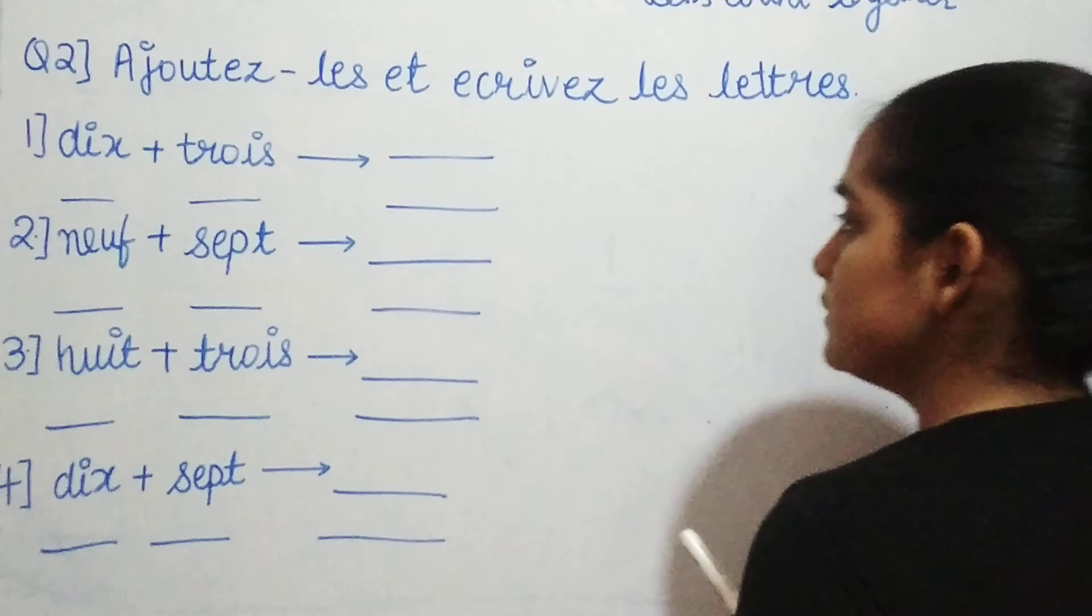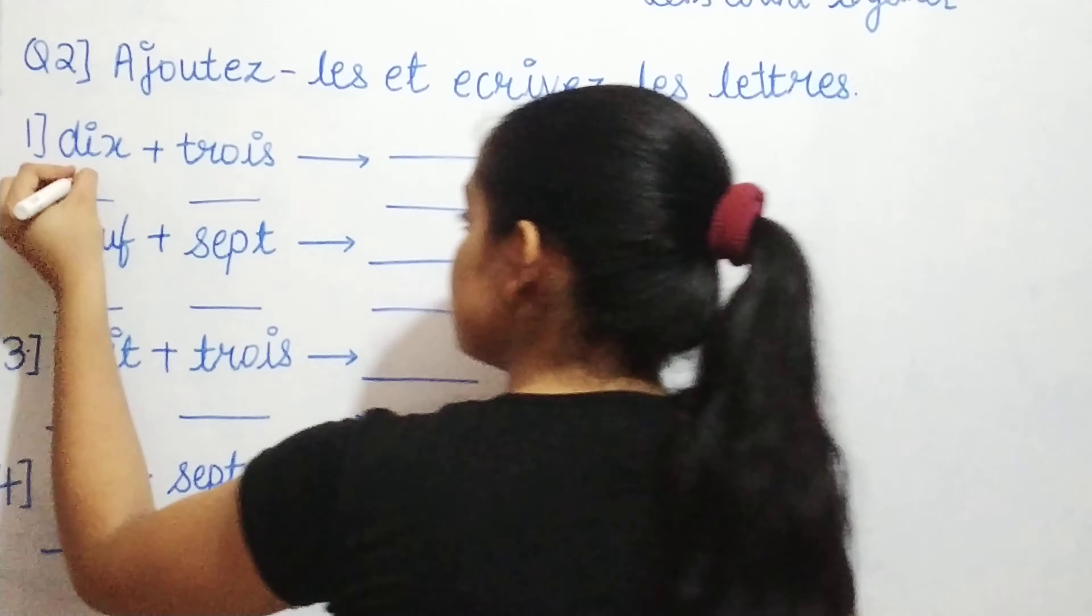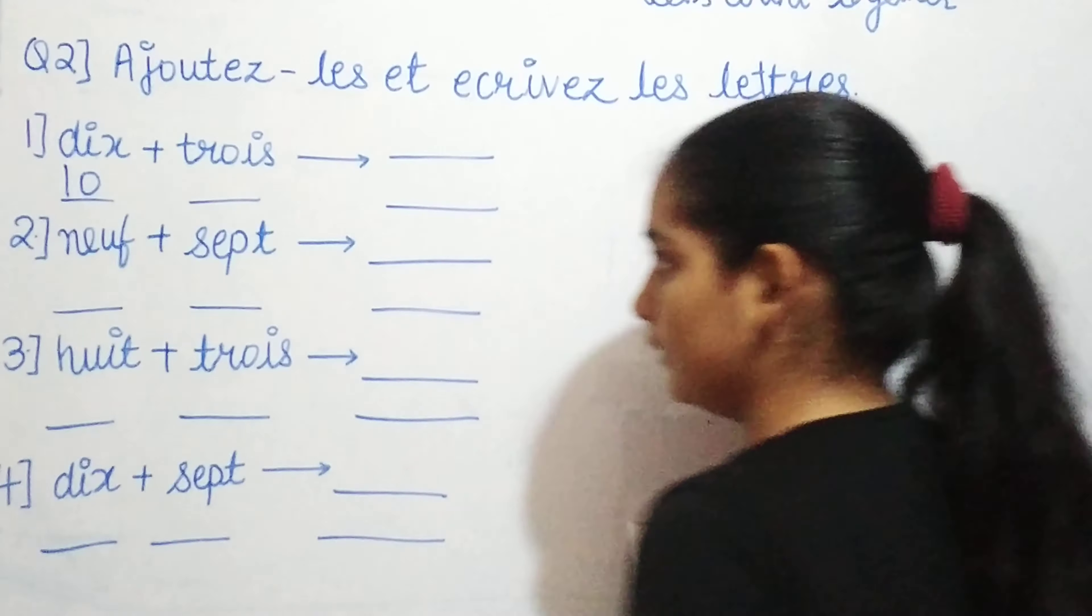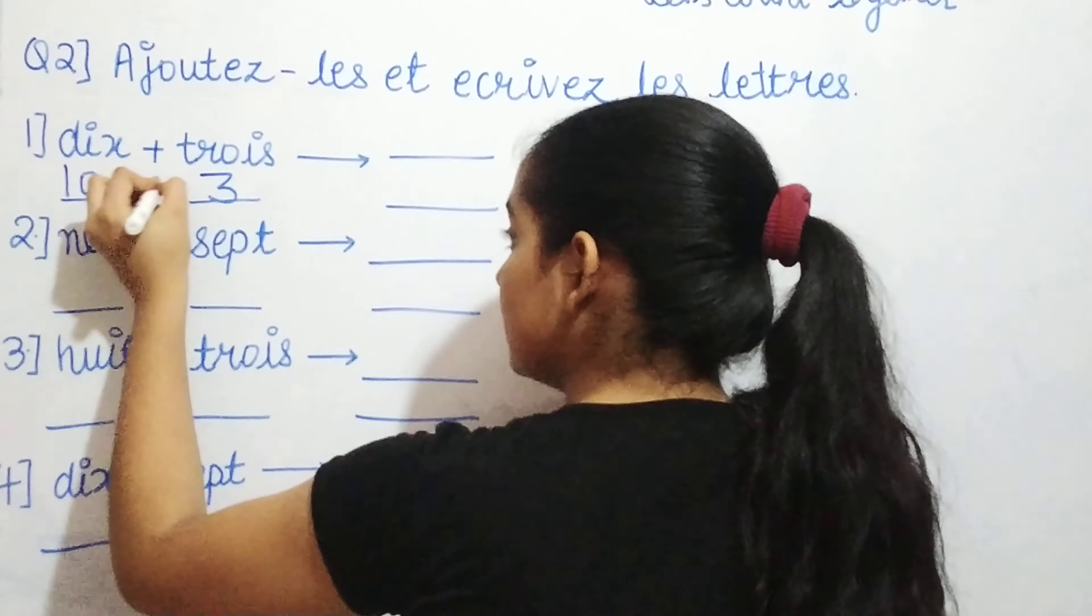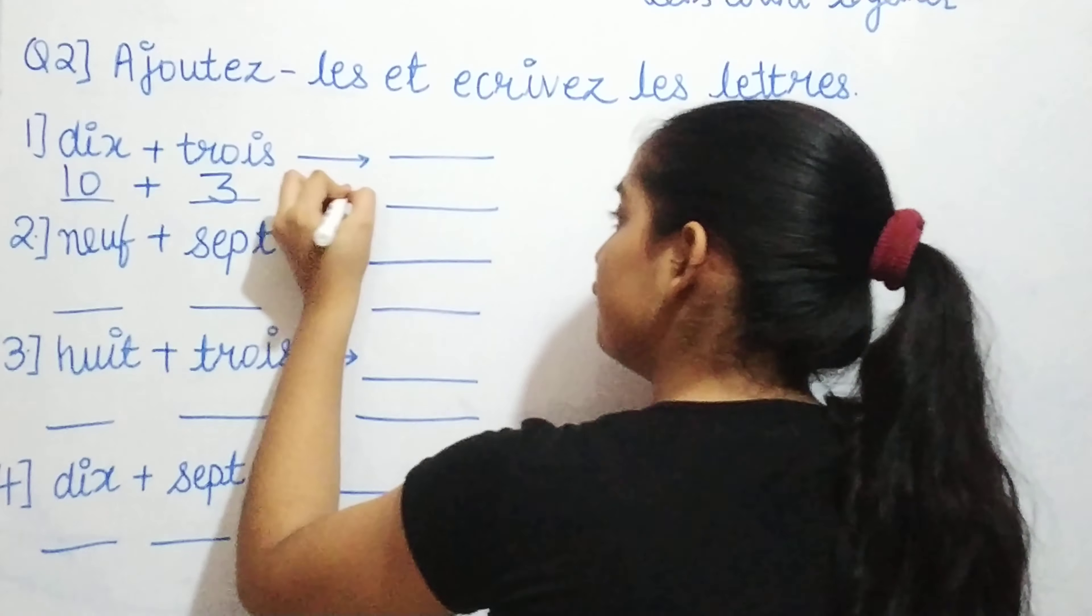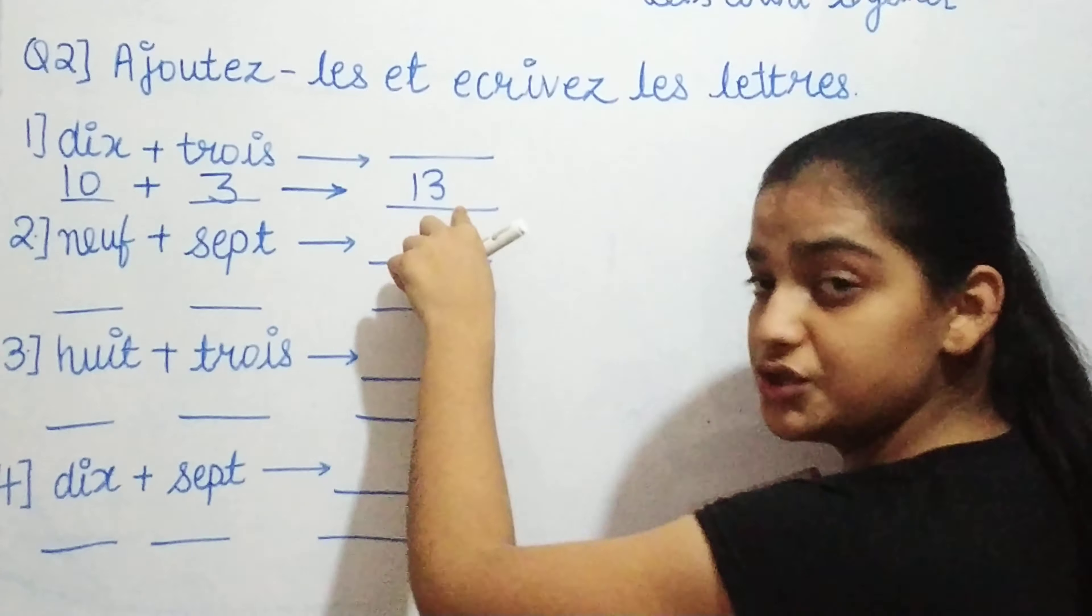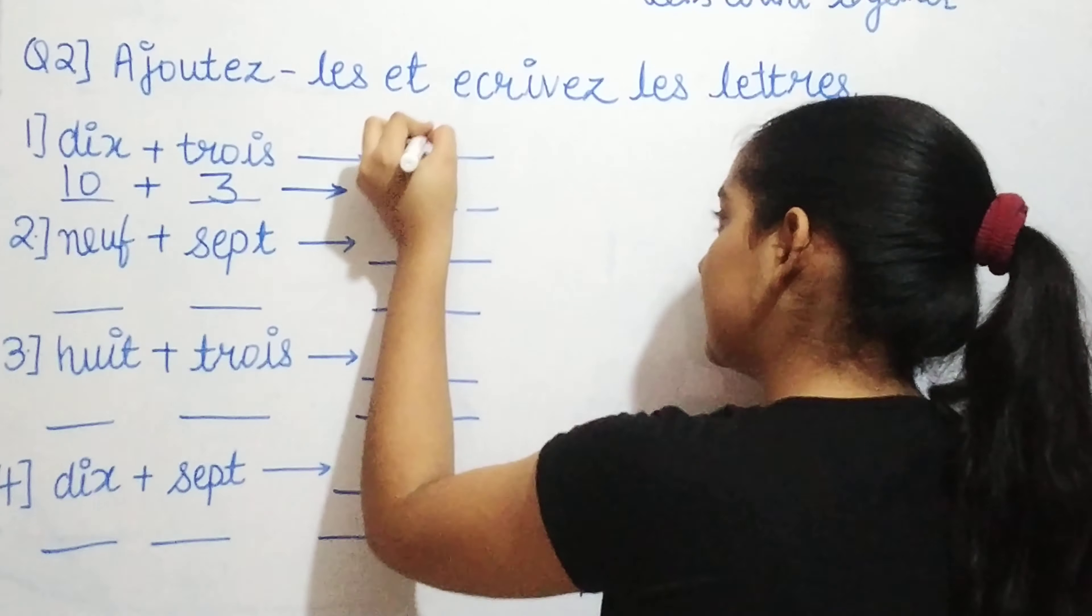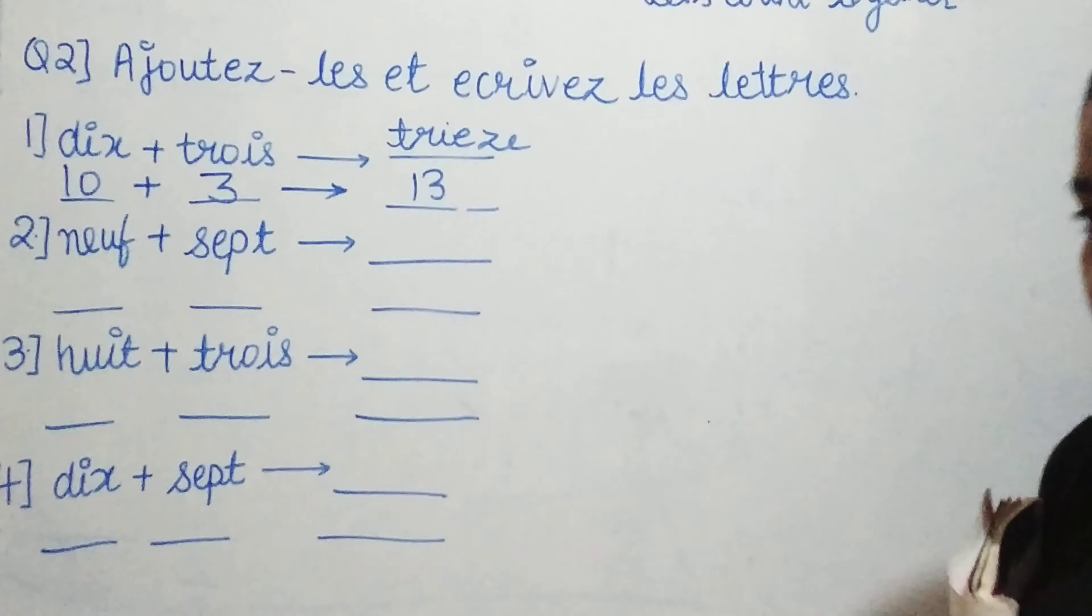First question is dix plus trois. What is your dix, guys? Dix is 10. And trois is what? 3. So, 10 plus 3 will give you how much? 13. And what do we say 13 in French? We say it as treize.